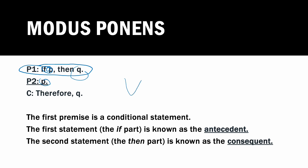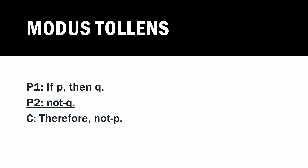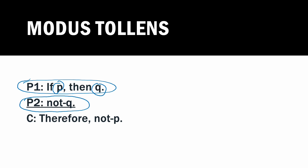The next argument pattern is: if P then Q; not Q; therefore not P. Premise one is a conditional statement; P is the antecedent, Q is the consequent. In the second premise, we are denying the consequent. Thus, this is known as denying the consequent, also known as modus tollens. Modus tollens is a valid argument pattern — meaning if the premises are true, the conclusion must be true. Whenever you encounter an argument that follows this exact pattern, you can be assured that it is a valid argument.